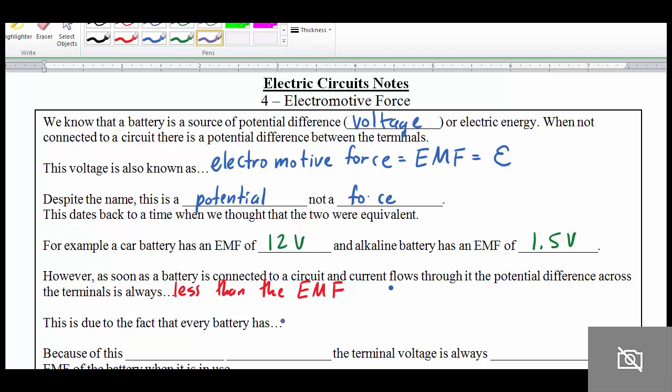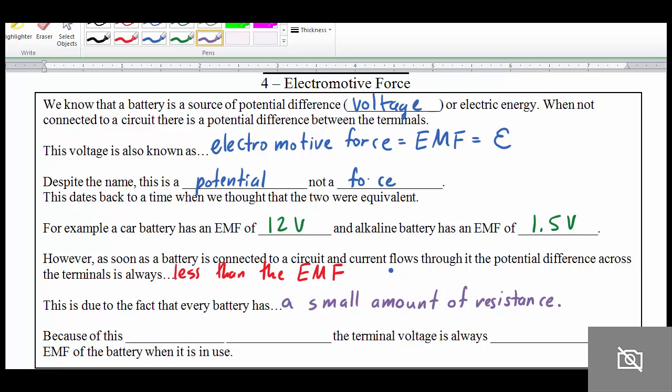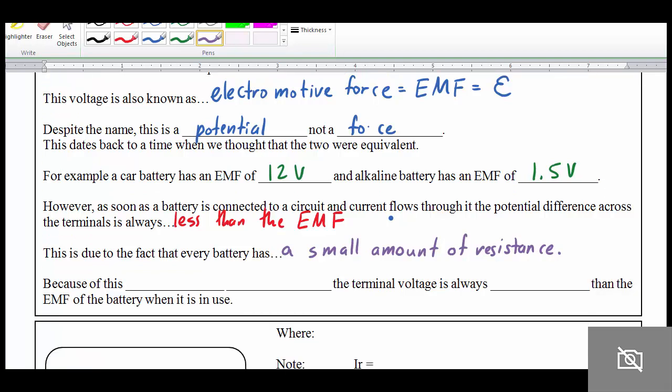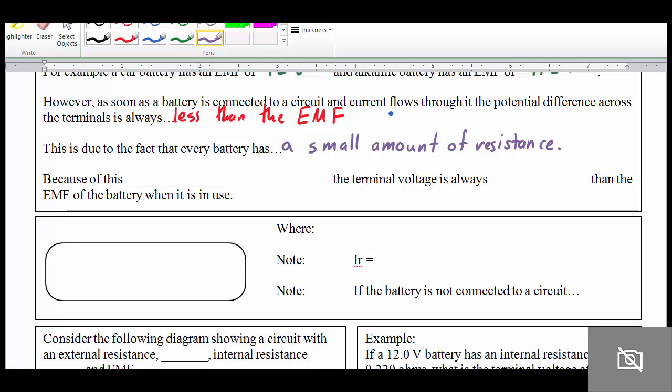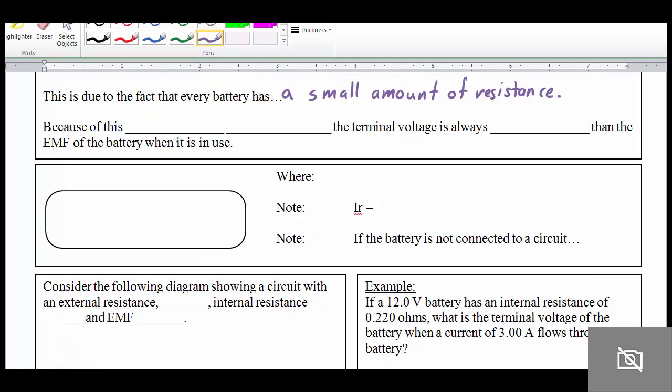And this is due to the fact that built into every battery is a small amount of resistance. So we call this internal resistance, and basically because of this internal resistance, the terminal voltage that you measure across your battery is always going to be less than the EMF of the battery when it's in use.